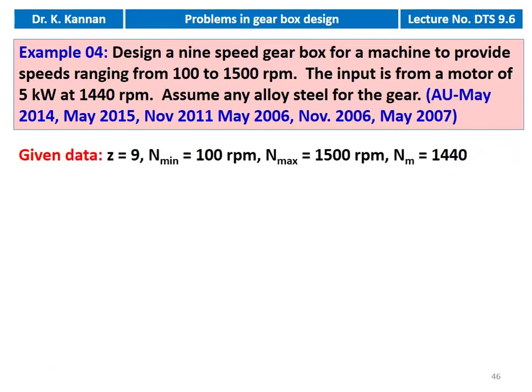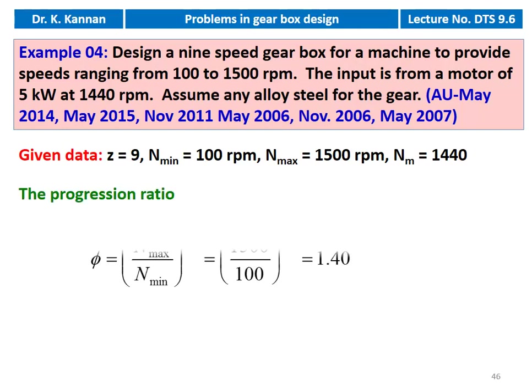The given data: number of steps equal to 9, minimum speed 100 RPM, maximum speed 1500 RPM, motor speed 1440 RPM, and power 5 kW. We calculate the progression ratio: φ = (N_max / N_min)^(1/(Z-1)) = (1500/100)^(1/(9-1)) = 1.40.